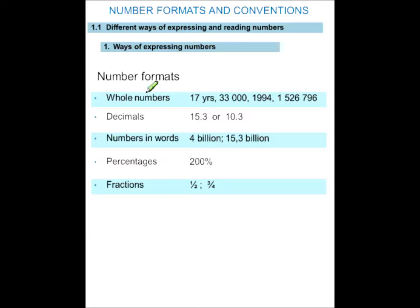In grade 8, you dealt with whole numbers. They're used to describe someone's age: 17 years, 33,000, 1994, 1,526,796. We also use decimals, decimal numbers: 15.3 or 10.3, but we prefer to write it as 10,3. We prefer to use the decimal comma.